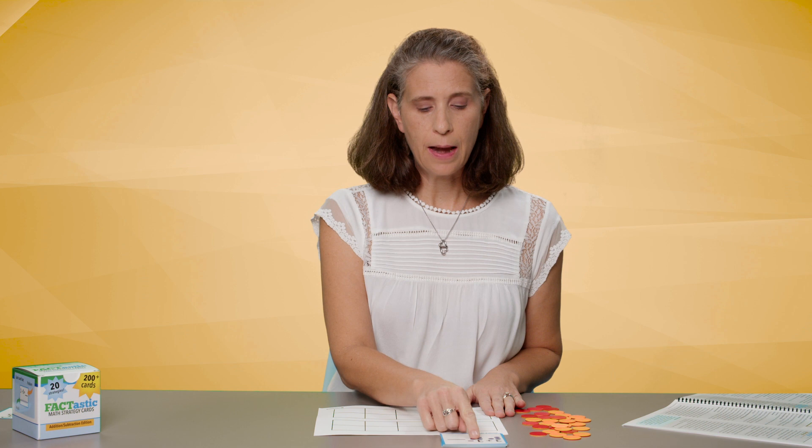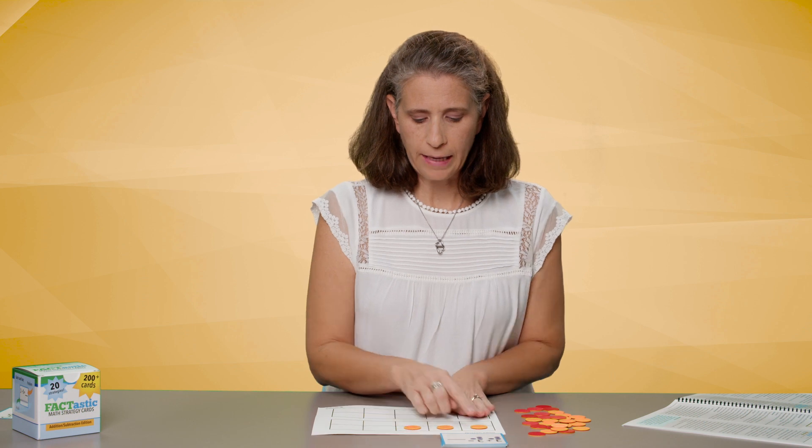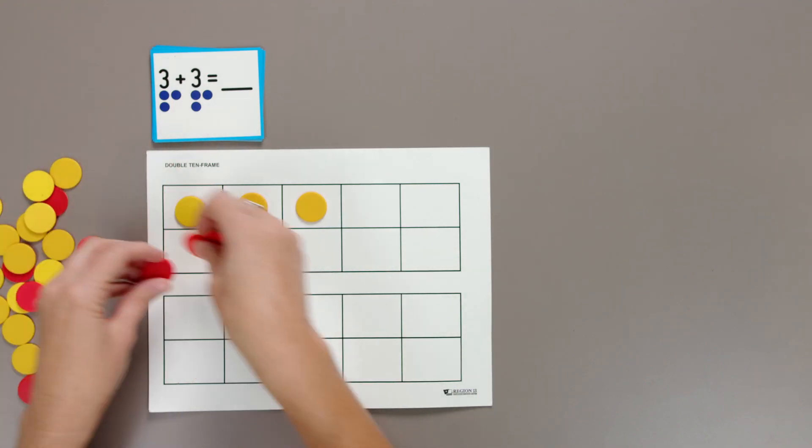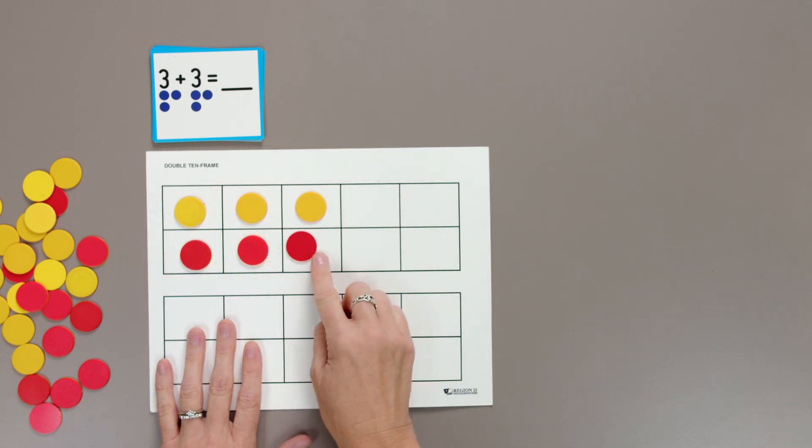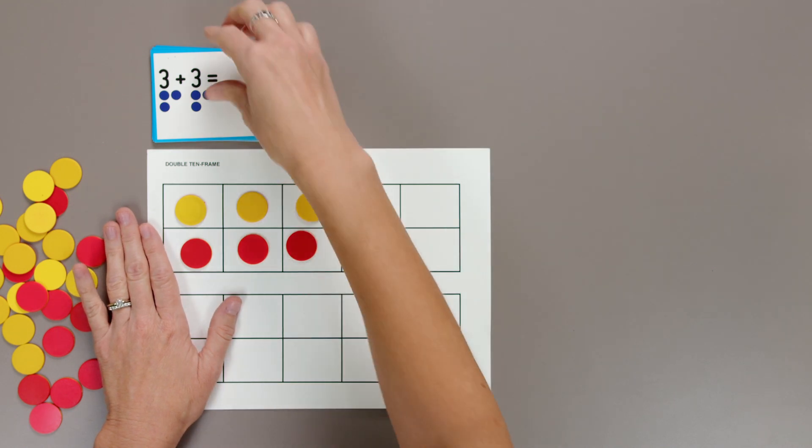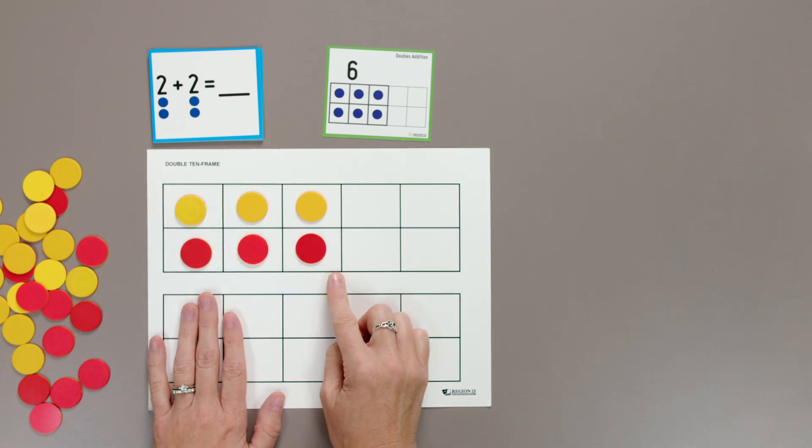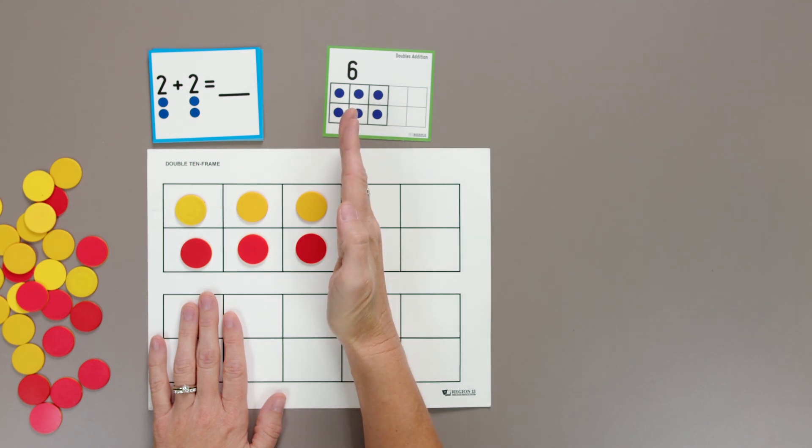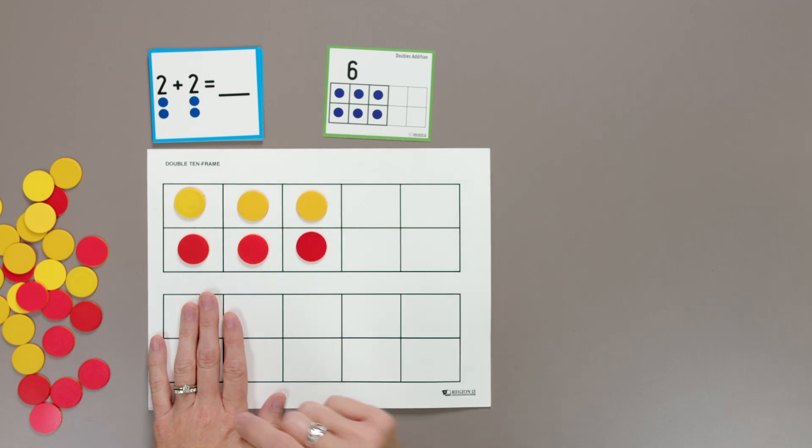We'll jump in with three plus three. It's a double because I'm adding the same number twice. I will build three on the top row of my 10 frame and three on the bottom row. I have three yellow, three red, three plus three equals six. That's right. And I think something's pretty interesting about this number. It looks to me this number six is an even number. Even means that each has a partner and no one is left out. We'll see if that pattern continues.